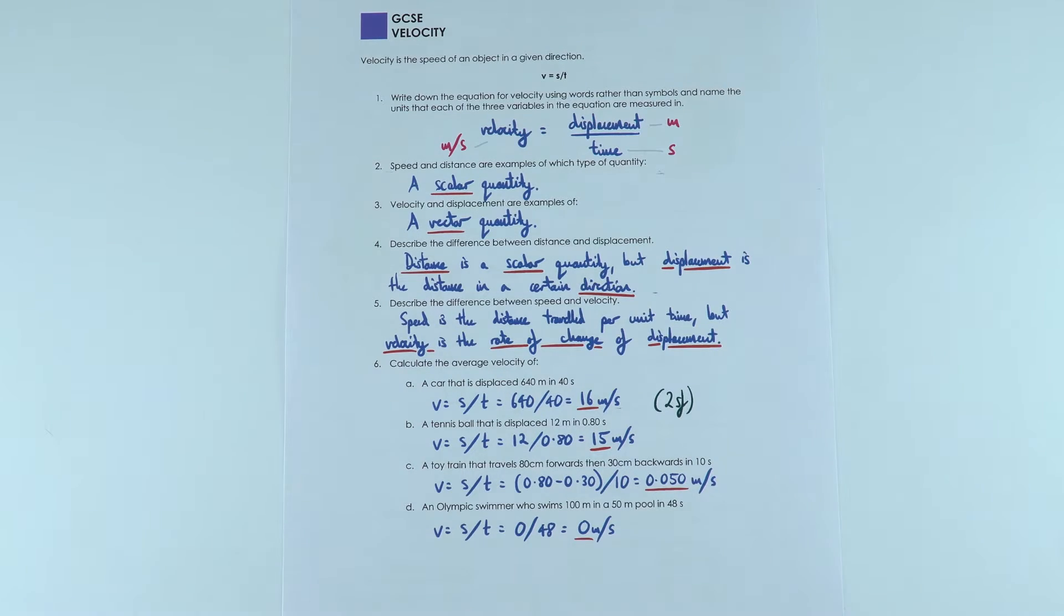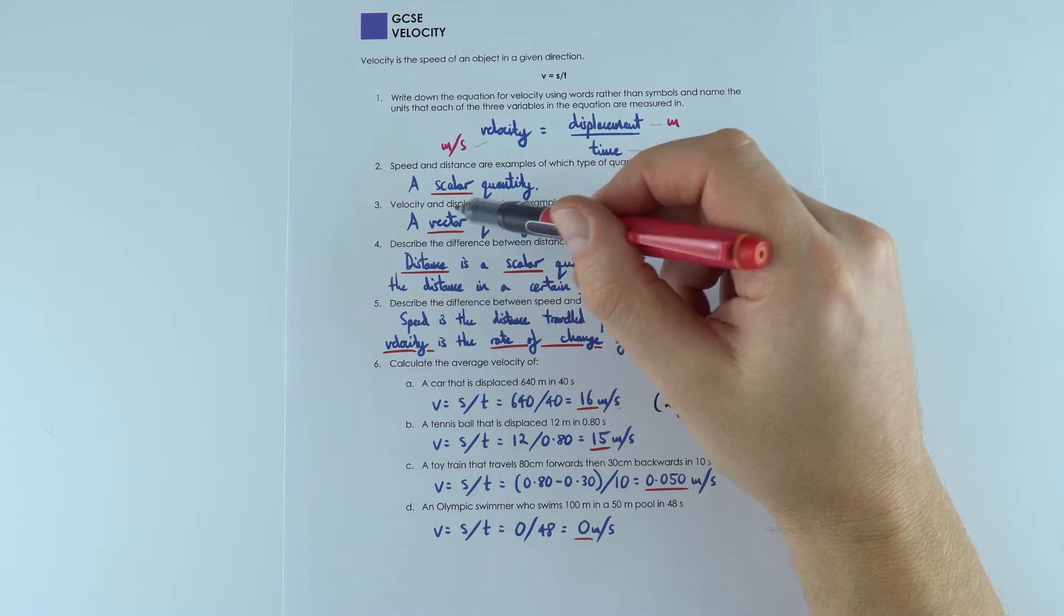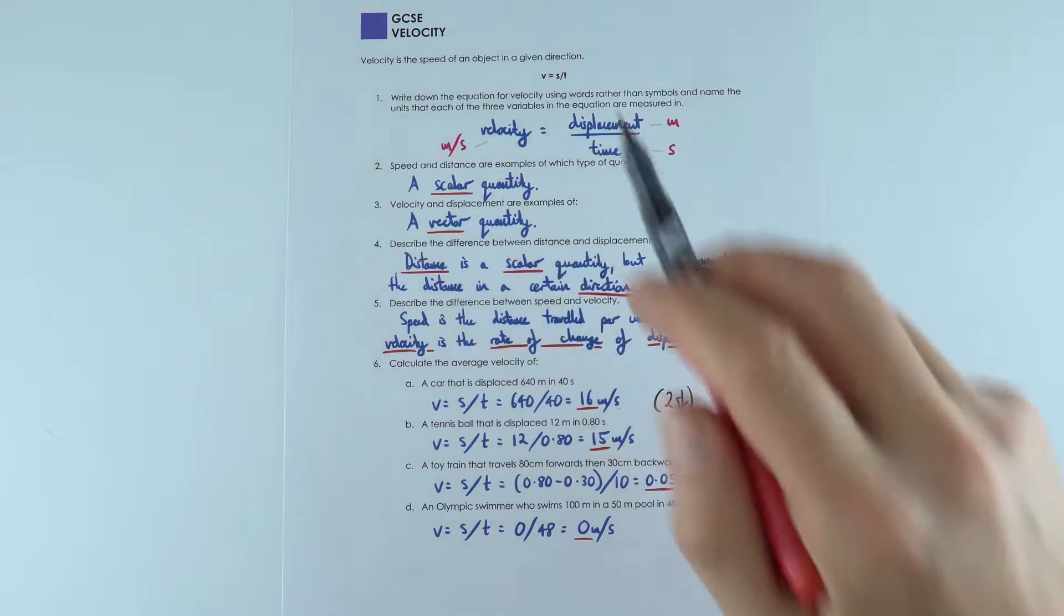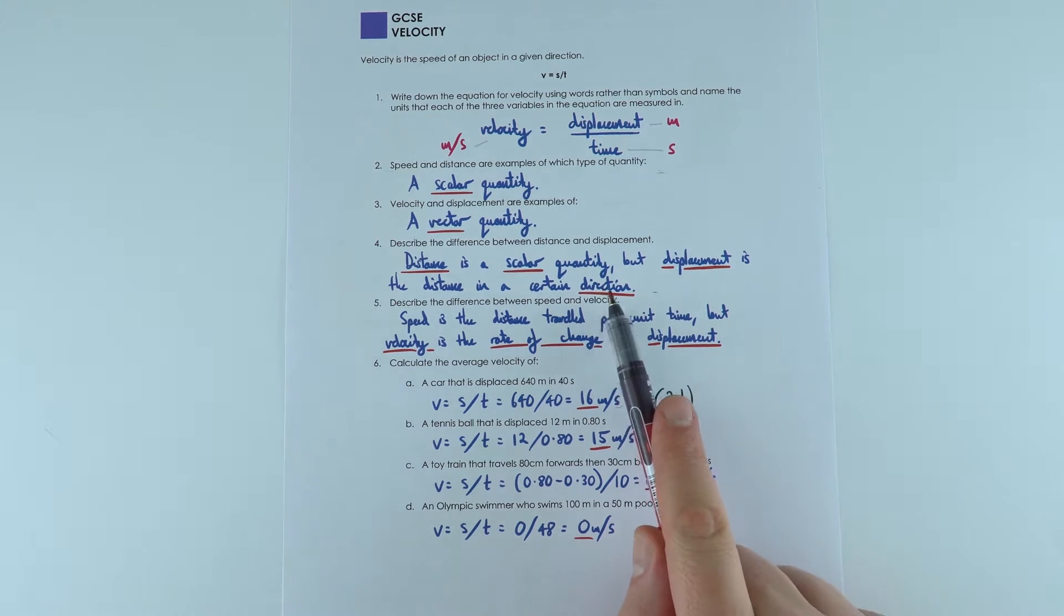So speed is a scalar quantity, but velocity and displacement are both vector quantities, which means they also have a certain direction that's important.